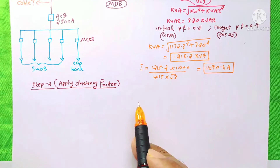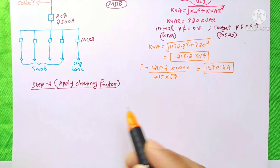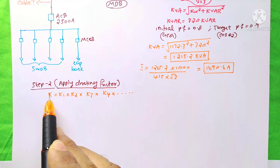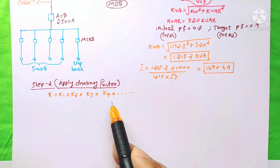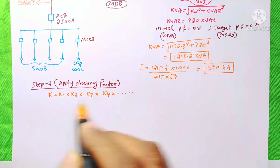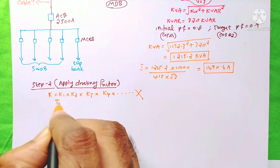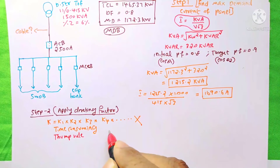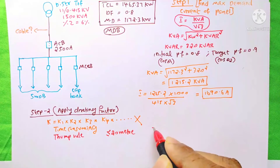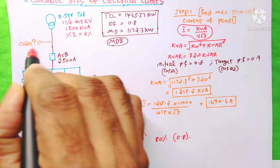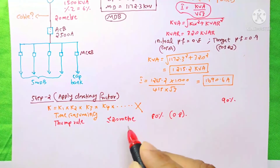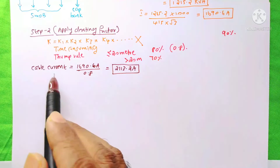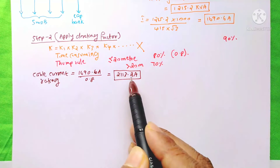The next step is applying the derating factor. The derating factor depends upon the cable route. As a practical thumb rule: if the cable length is less than or equal to 20 meters, consider 80% derating factor. The cable length here is 20 meters. If the cable length is more than 20 meters, consider 70% derating factor. Applying the 80% derating factor gives a derated load current of 2113.2 A.